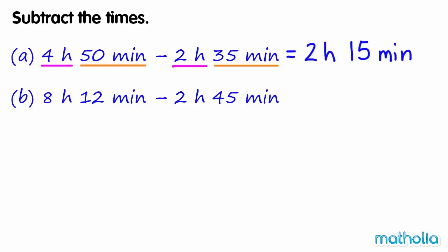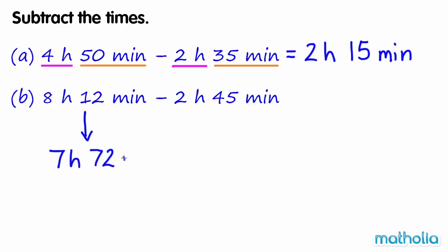Find 8 hours 12 minutes minus 2 hours 45 minutes. We cannot subtract 12 minutes from 45 minutes, so we regroup 8 hours 12 minutes to 7 hours 72 minutes. Now we can subtract.